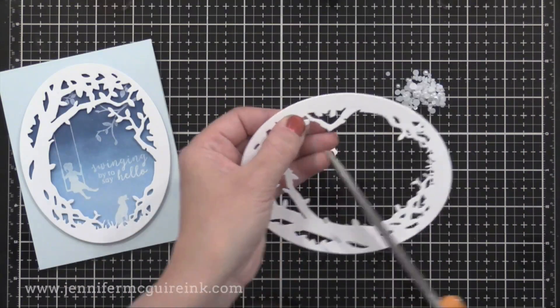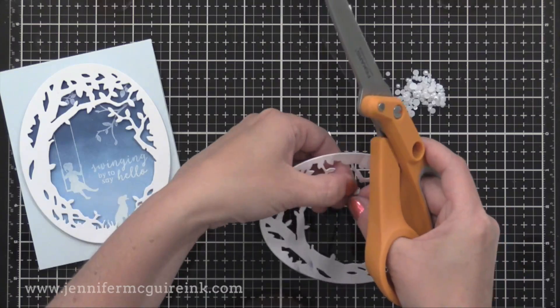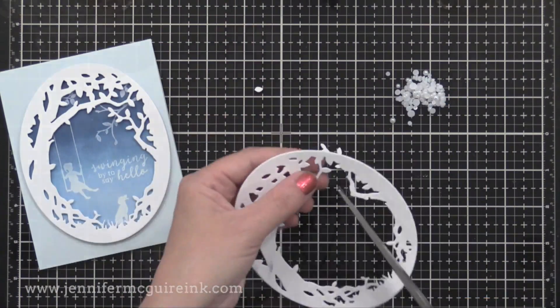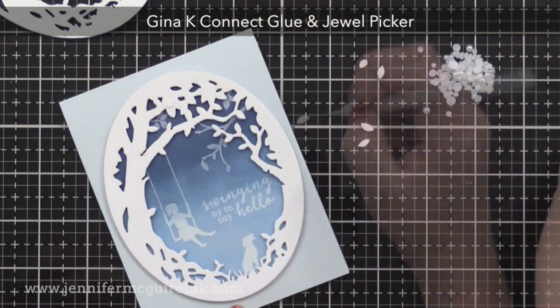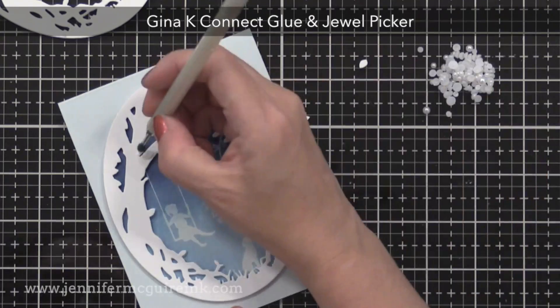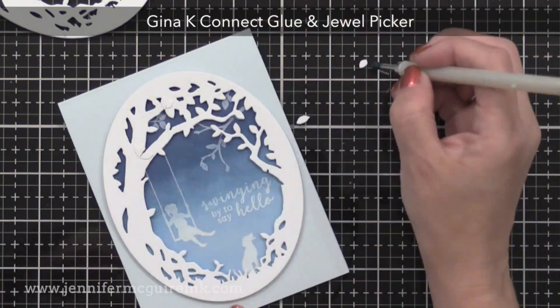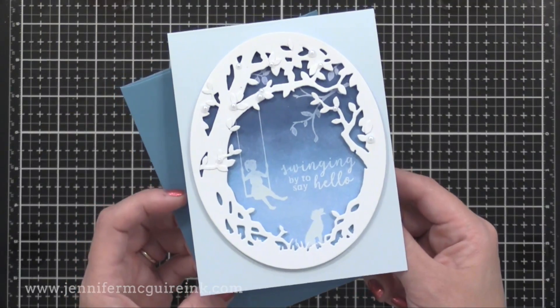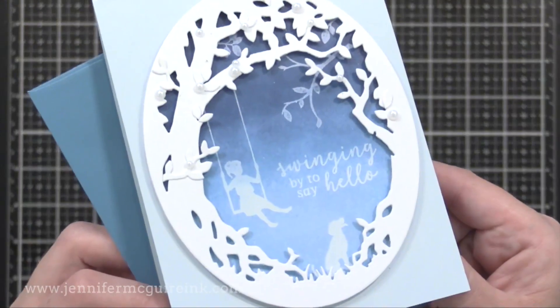I die cut another frame from white card stock just to cut off some extra leaves. And these little leaves I'm going to glue onto the frame of my card. This little step takes a few minutes, but it's definitely worth it because it adds a lot of interest to have those additional leaves. I'm also gluing on some pearls here and there.